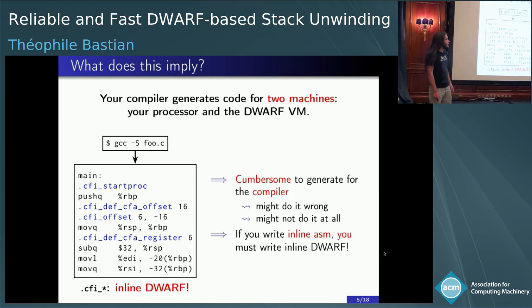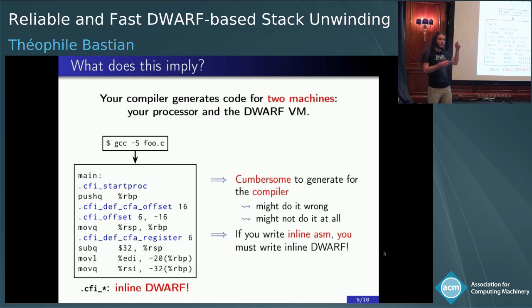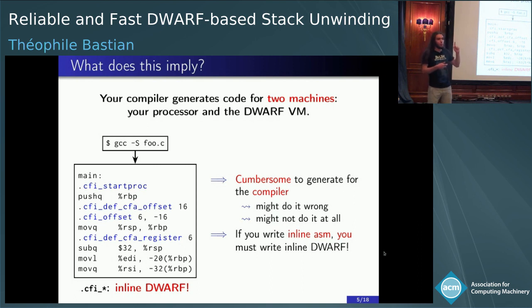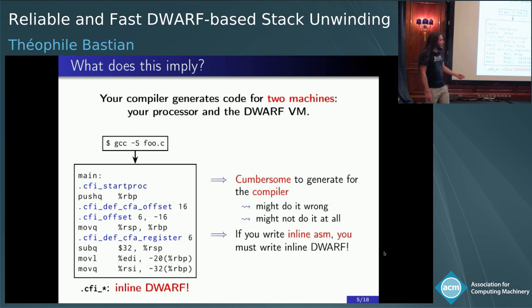This means two things. First, it is complicated to generate for the compiler, because you have all these optimization layers and you want to keep the DWARF in sync with the original code — and that's complicated. So your compiler might do it wrong, which leads to bugs. And your compiler might actually not do it at all. For years, OCaml didn't have any DWARF generation, because it was complicated to generate and really hard. And this means that for years, you could not use GDB with OCaml.